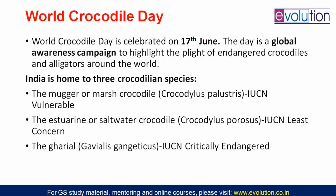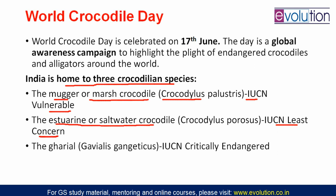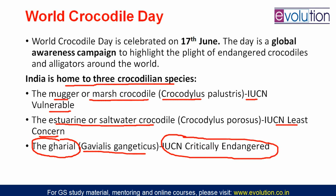Caiman also belongs to the order Crocodilia under the family Alligatoridae, subfamily Caimaninae. Their living places are Mexico, Central and Northern South America in marshland, mangrove rivers, and lakes. In India there are three crocodilian species: the mugger (marsh crocodile) — IUCN status Vulnerable; the estuarine or saltwater crocodile — Least Concern; and the gharial (Gavialis gangeticus) — IUCN Critically Endangered.